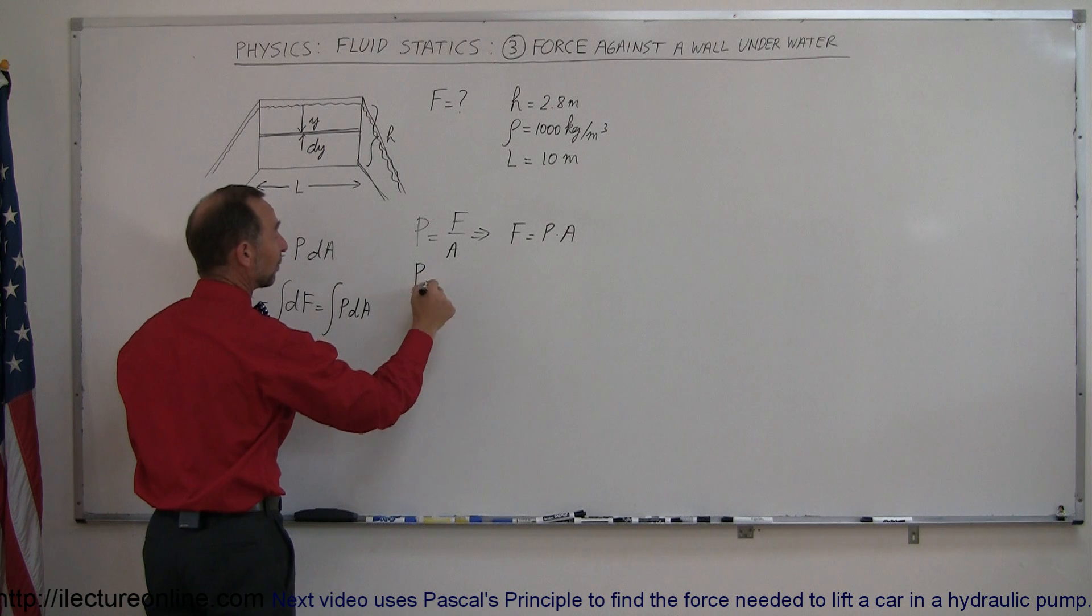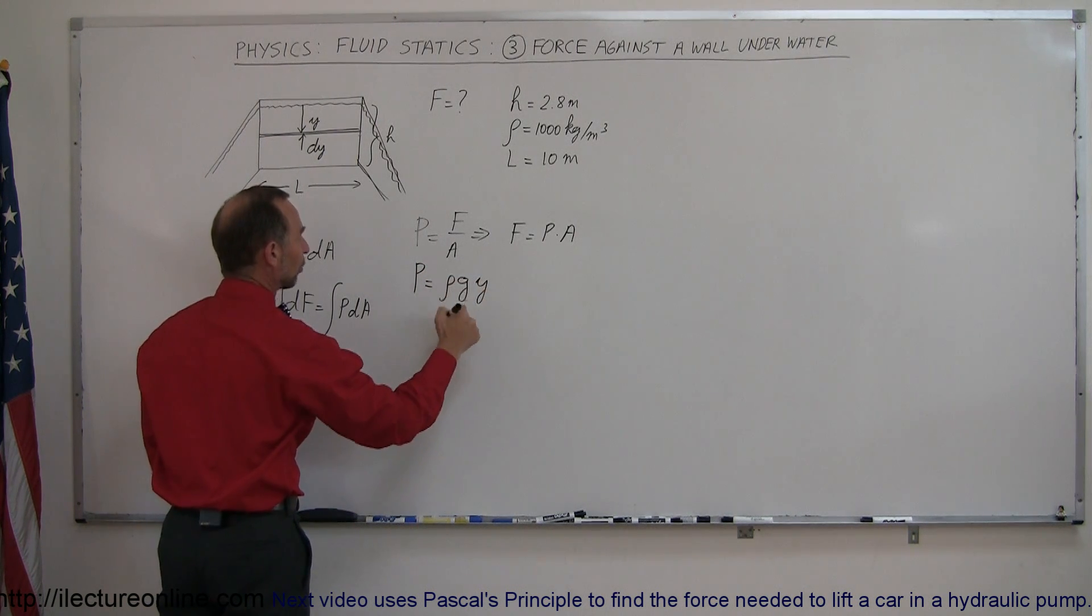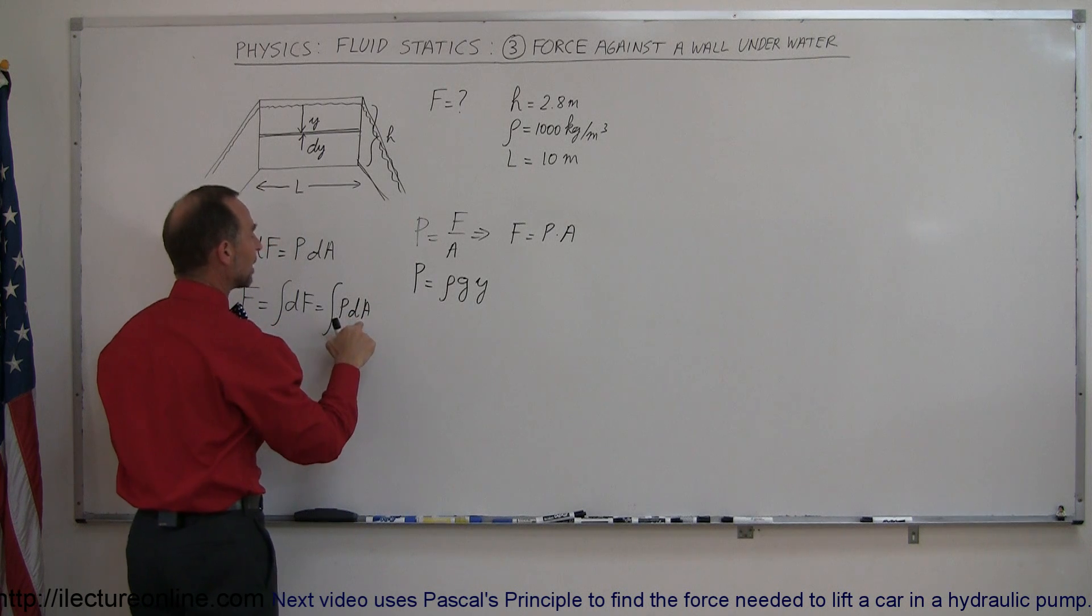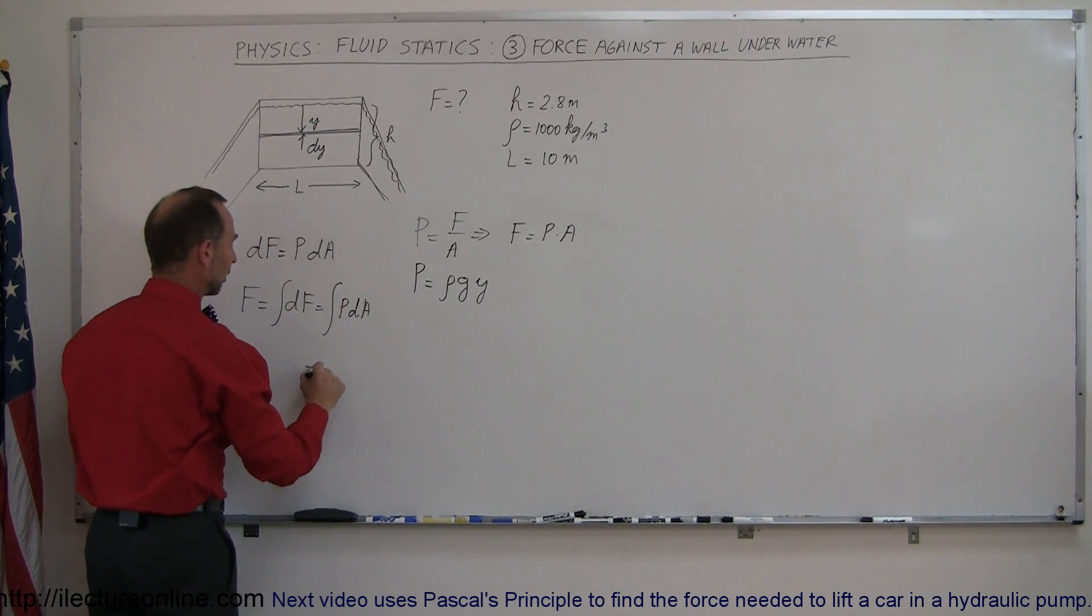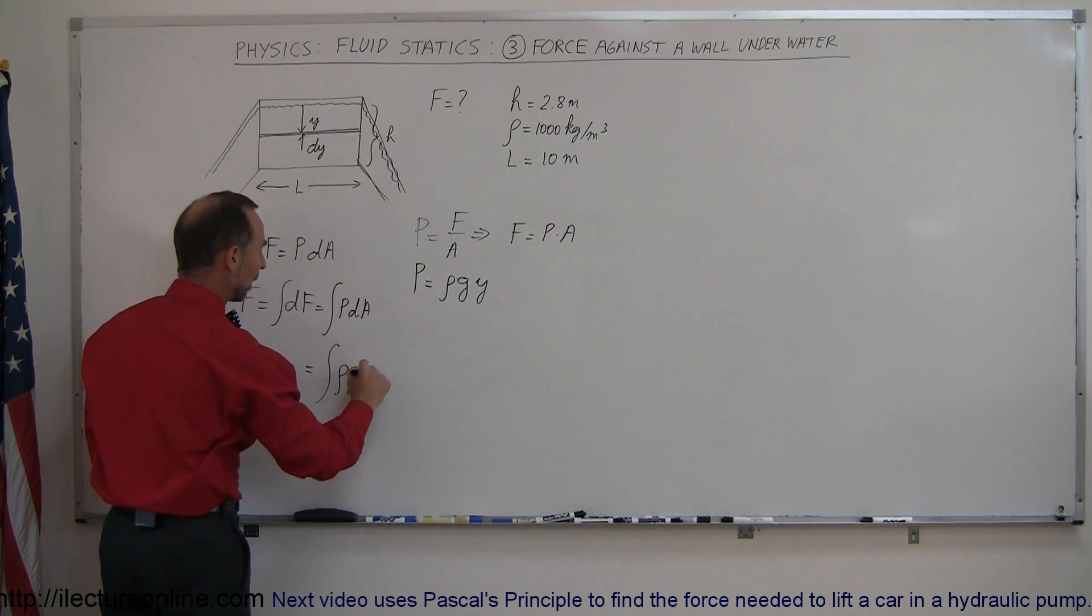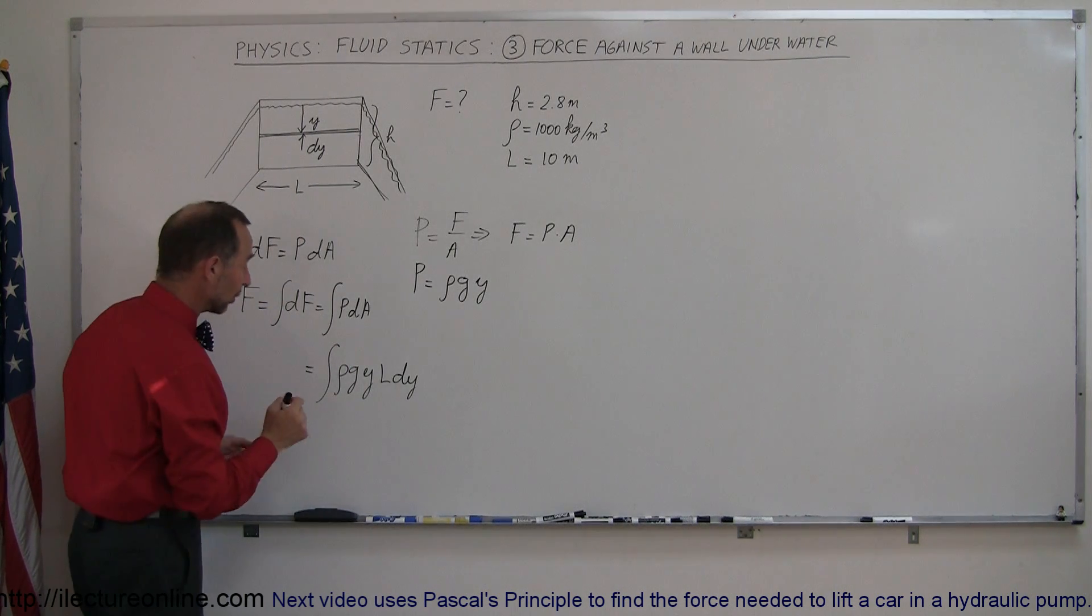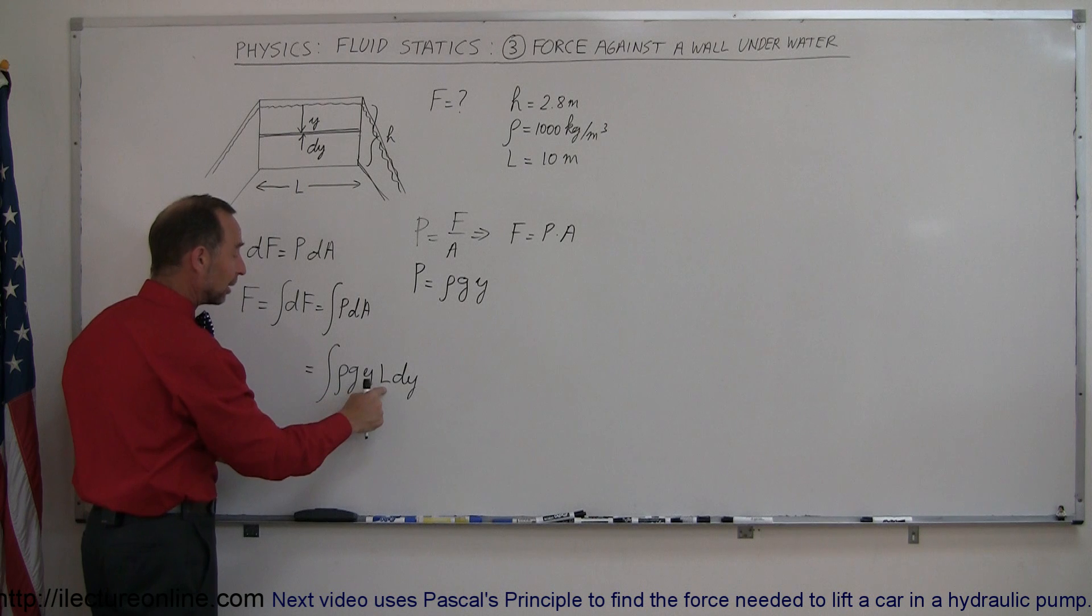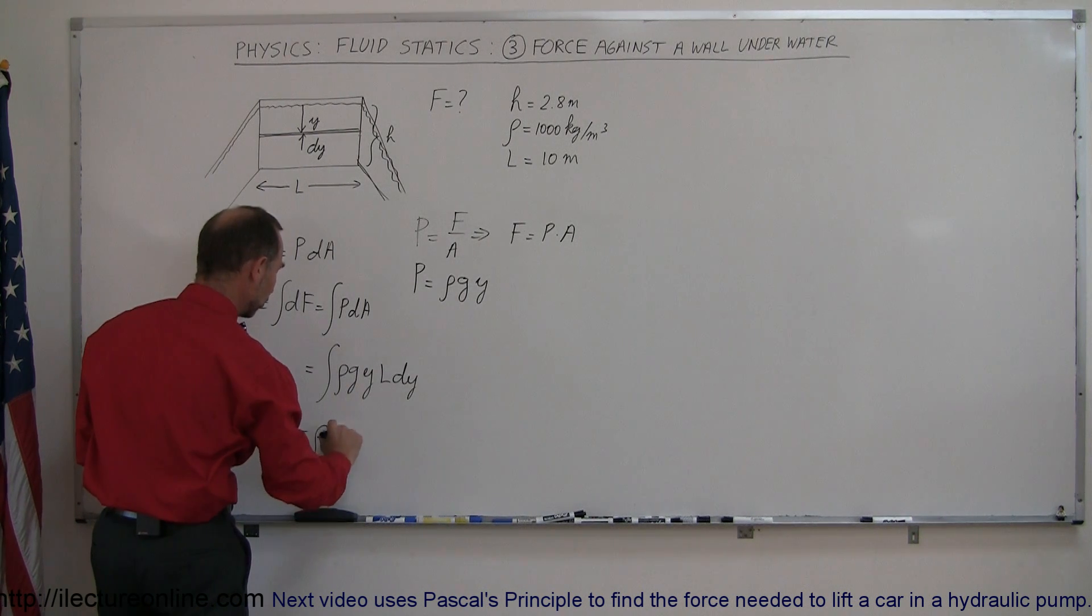the pressure at any depth underneath the water is equal to ρgy, and so we substitute that in for p, and then dA of course will be the length times the width of each strip. So this is equal to the integral of ρgy, and dA would be equal to L times dy. And then you notice that in this integral, ρg and L are all constant, they come outside the integral, so this now becomes ρgL times the integral of y dy,